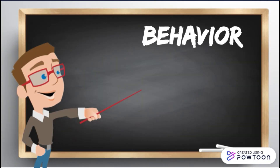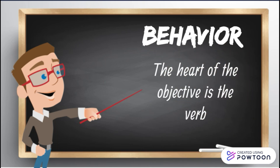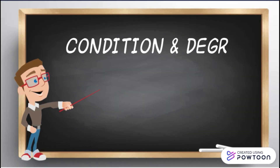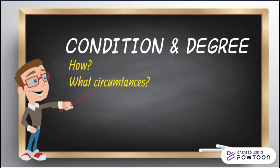The second part is the behavior to be demonstrated. The heart of the objective is the verb describing the new capability that the audience will have after instruction, and this verb should communicate your content clearly if it is stated as an observable behavior. Next is the condition and the degree. The condition refers to how and under what circumstances the objective is to be observed. The final requirement is to indicate the standard by which acceptable performance will be judged — what degree of accuracy or proficiency must the learner display, whether the criteria is stated in quantitative or qualitative terms.